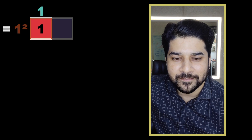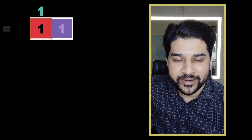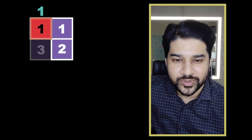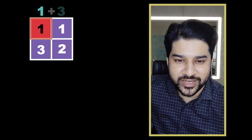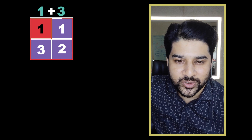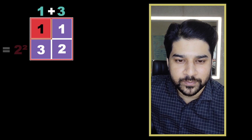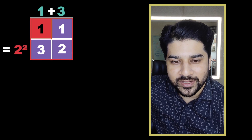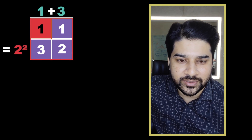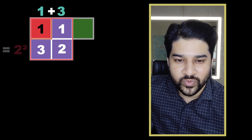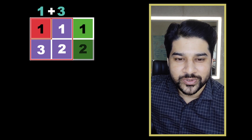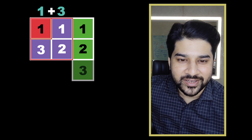Let's see: one, two, three — so we needed three more squares to build a bigger square of two by two. Now let's say we want to build a square of three by three, so we'll be needing one, two, three...